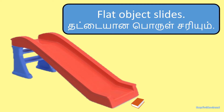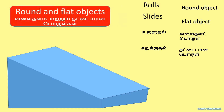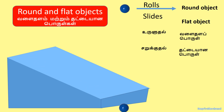Flat object slides. Let us check what are all the round and flat objects given in the slide. Ball rolls, so it's a round object. Brick slides, so it's a flat object.